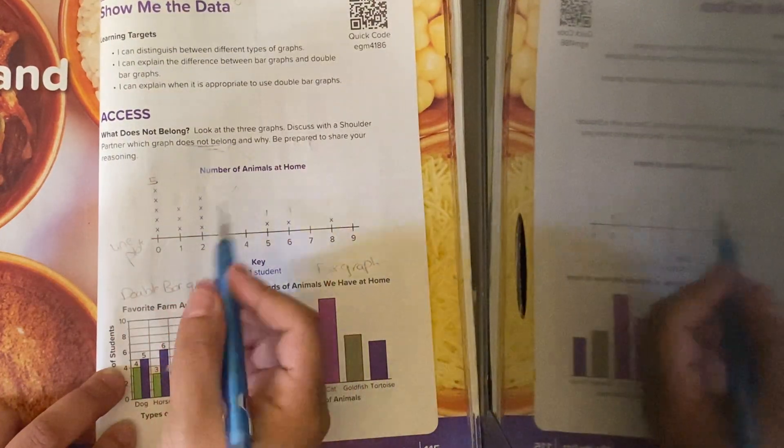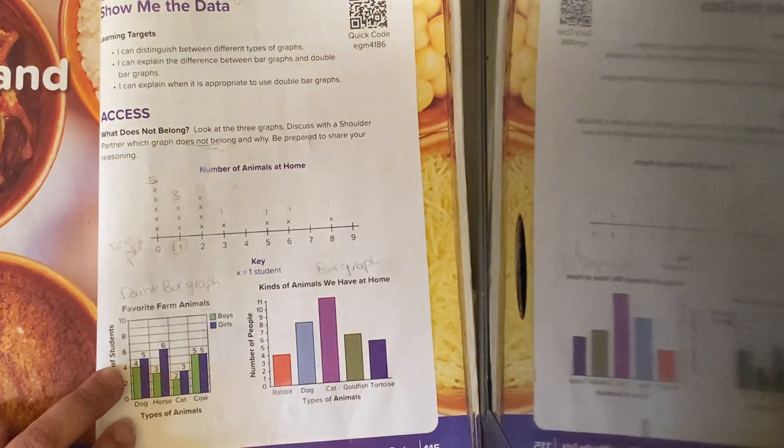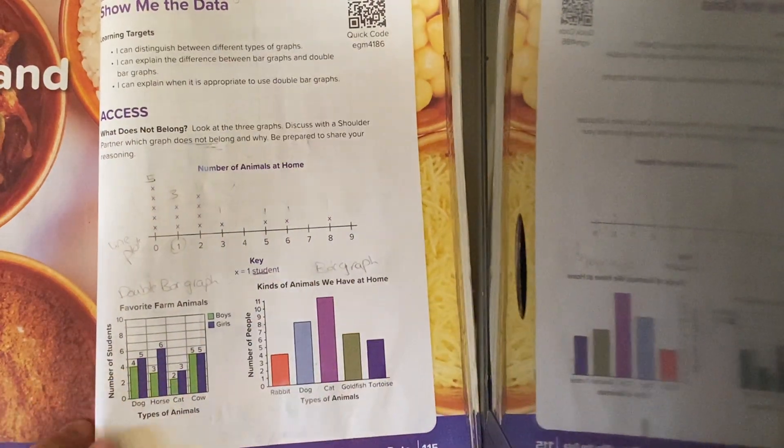How many have 1 animal, 3. And so on. The number of X's represent 1 student.